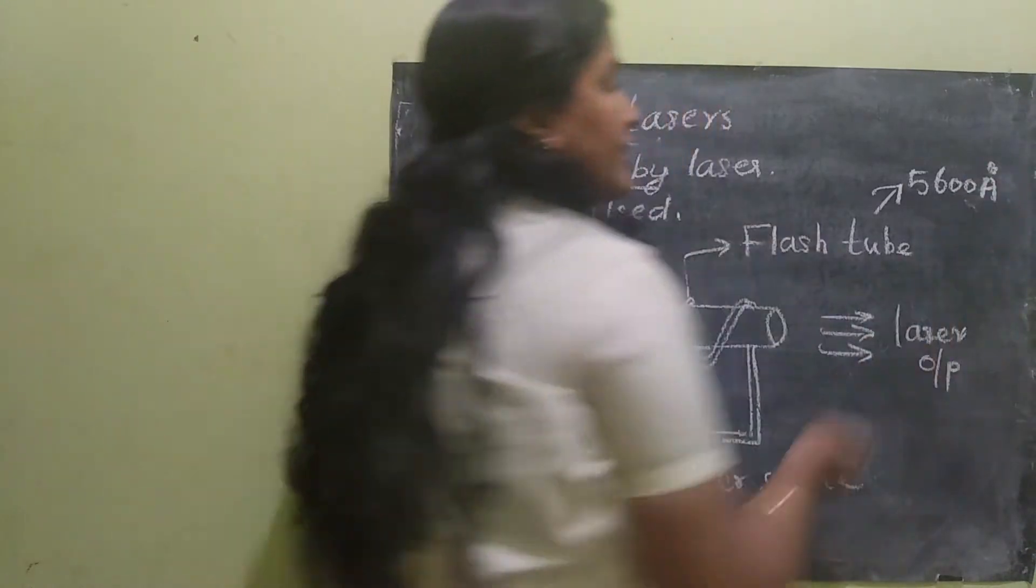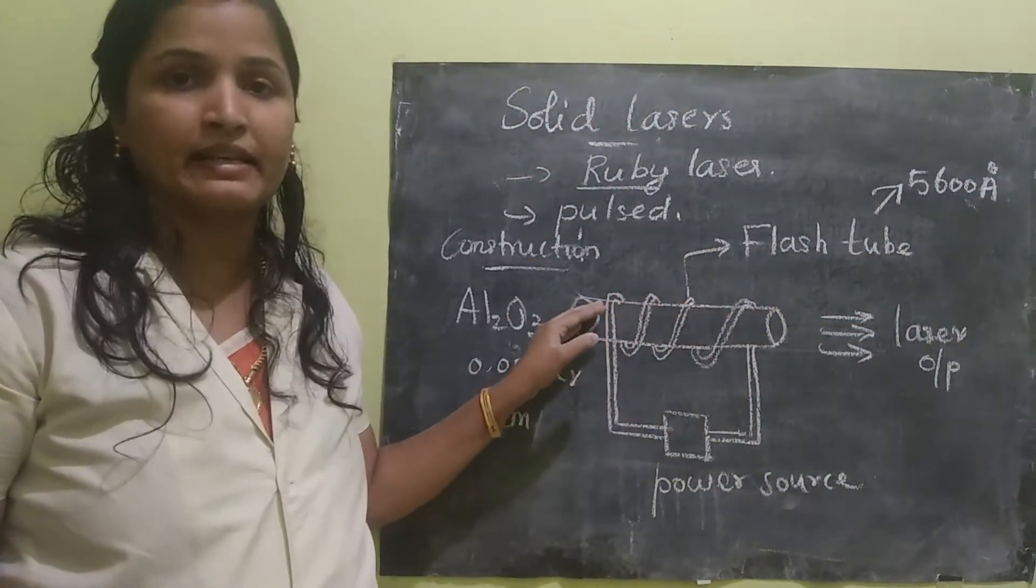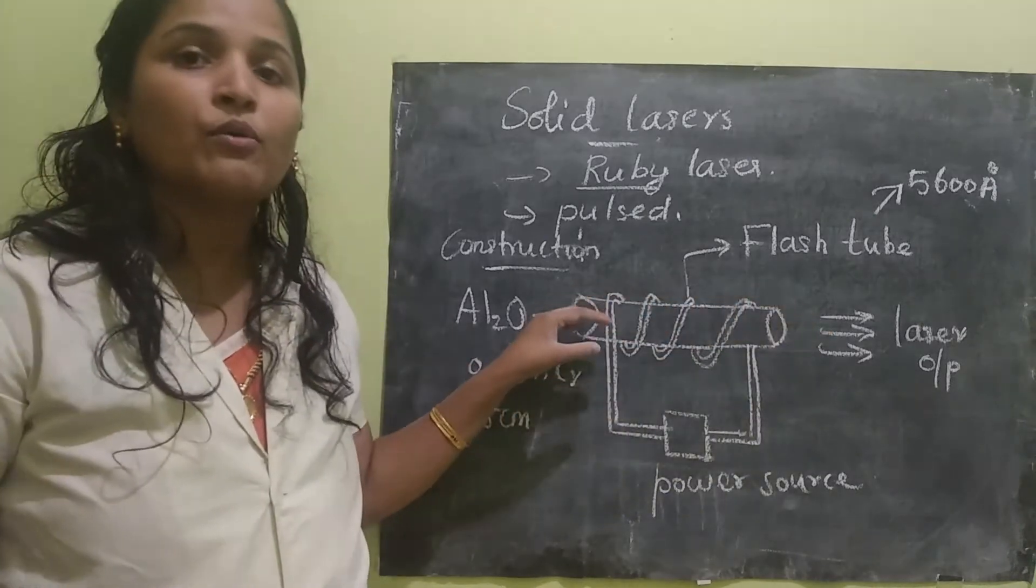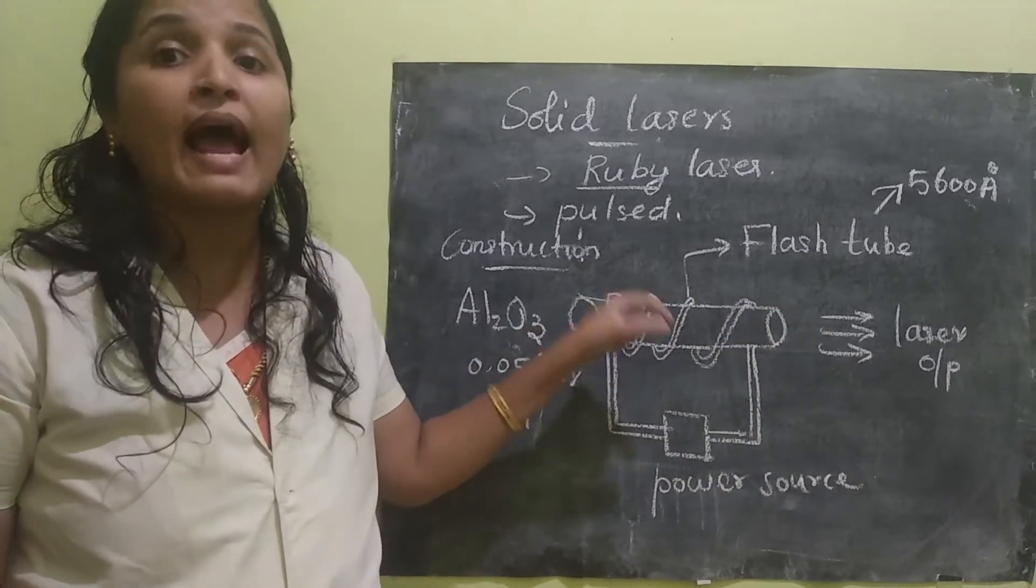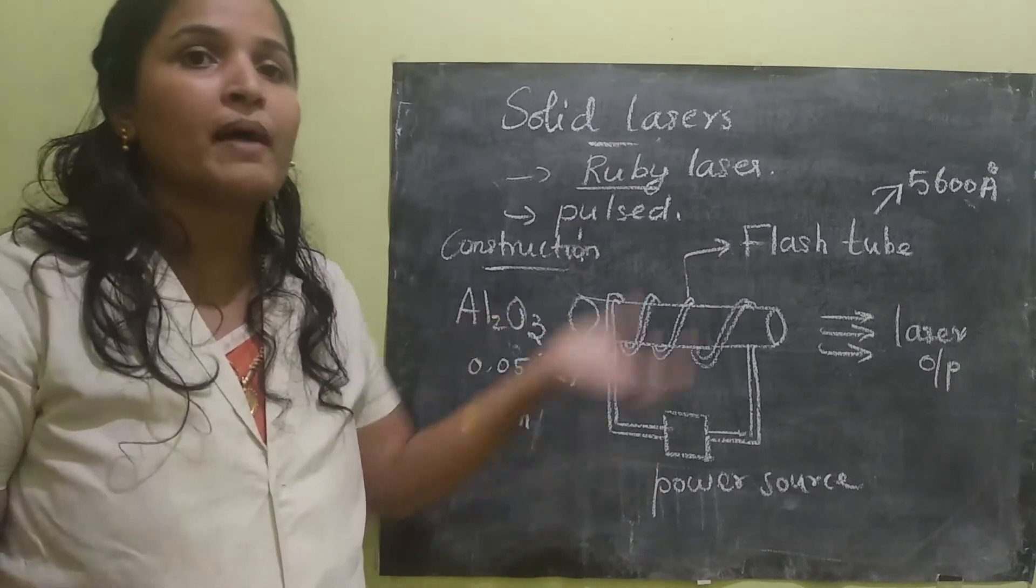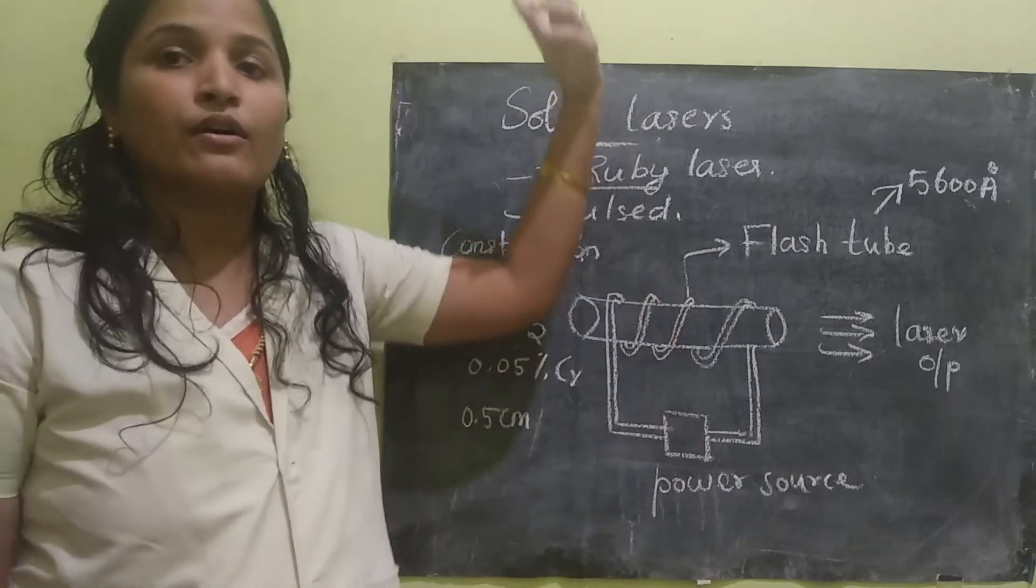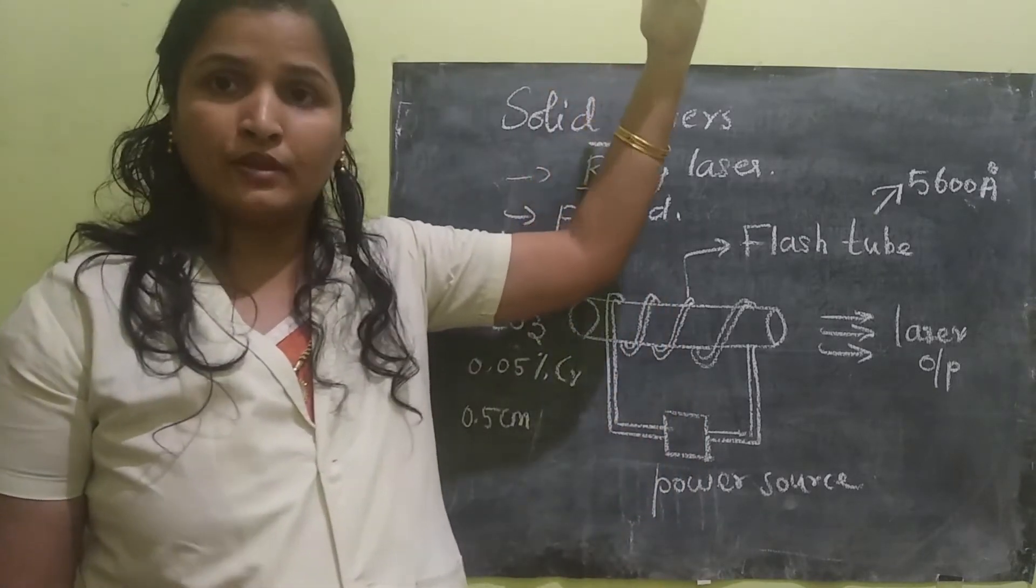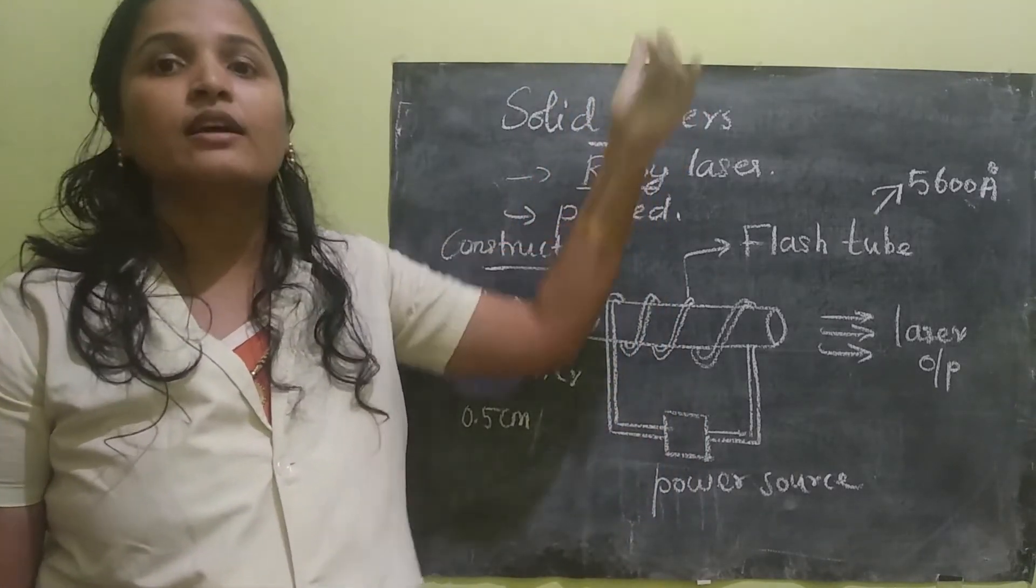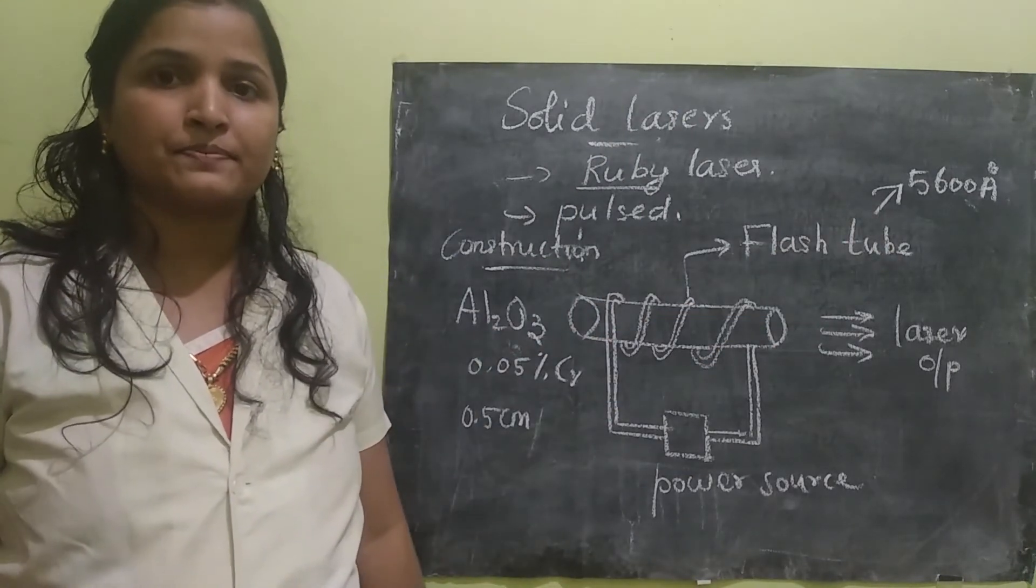Once this 5600 Armstrong wavelength strikes over this material, the active rod, the chromium atoms will get excited. The chromium atoms will get excited and again when it comes back from the higher excited state, it will emit radiation. So that is the concept under this.